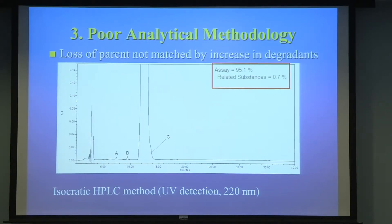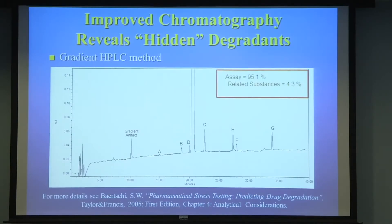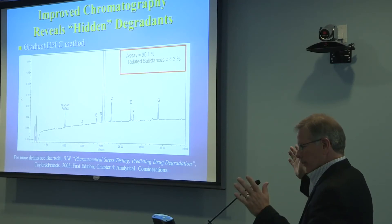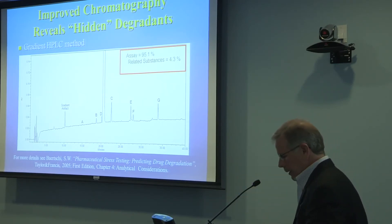We switched to our normal gradient method and initially ignored this as a gradient artifact. But with this unoptimized gradient method, all of a sudden we pulled out a number of degradation products and it started to look like pretty good mass balance — same wavelength, just a gradient where you get better resolution. I'm always worried when looking at an isocratic run whether we're seeing everything. I like to go from very weak to strong polarity and have a good gradient to optimize your chances of resolving.